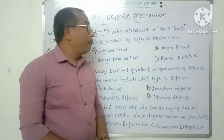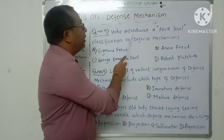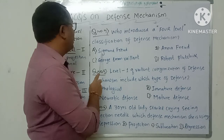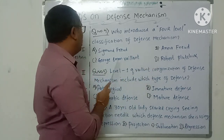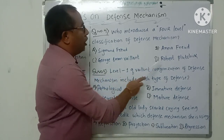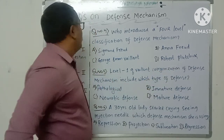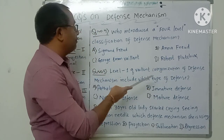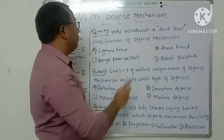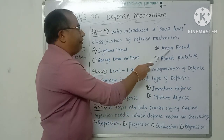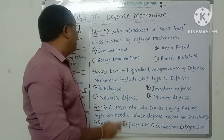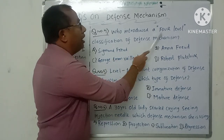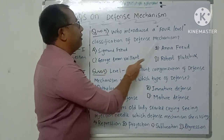Question number four: Who introduced a four-level classification of defense mechanisms? Option A: Sigmund Freud. Option B: Anna Freud. Option C: George Vaillant. Option D: Robert Plutchik. Sigmund Freud discovered defense mechanisms but did not introduce the four-level classification. Not Anna Freud and not Robert Plutchik. It is George Vaillant who introduced the four-level classification of defense mechanisms.